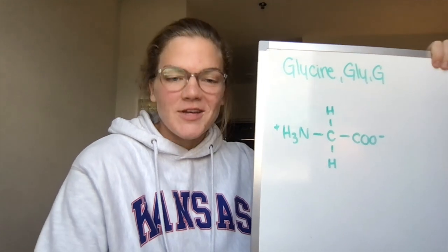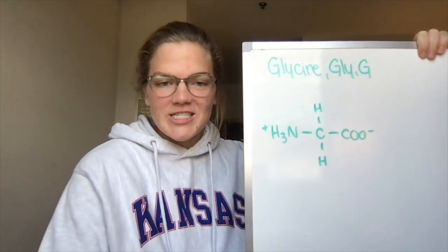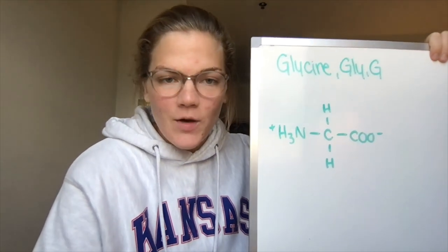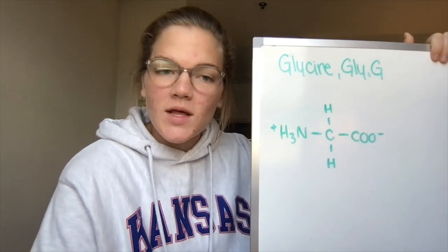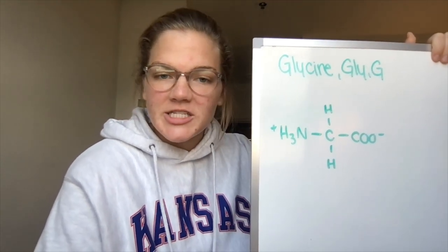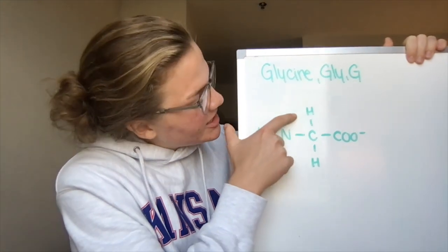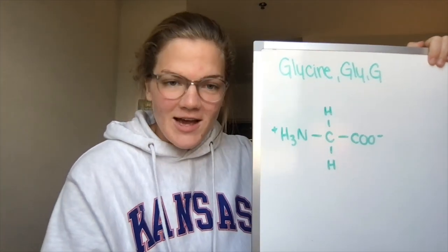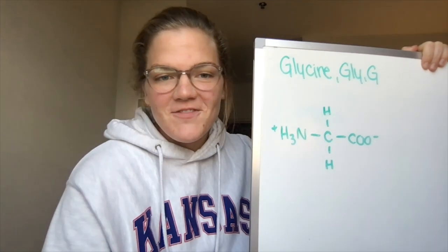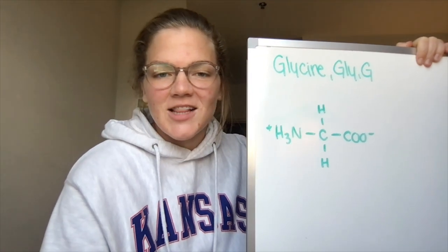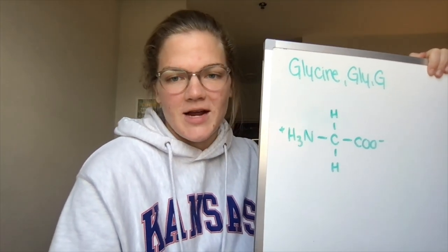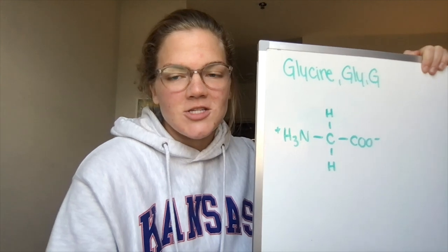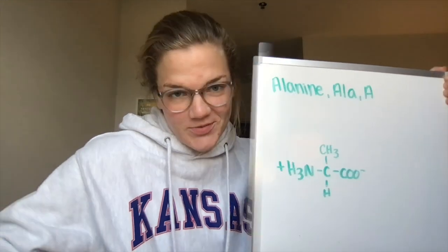First up we got glycine. The three-letter abbreviation is GLY. The one-letter abbreviation is G. For the side chain here, we just have a hydrogen, so it's actually an achiral molecule. A fun fact is that glycine is found in the bladder, the brain, the intestines, the prostate, and the skin.